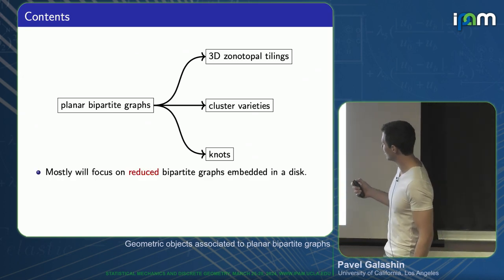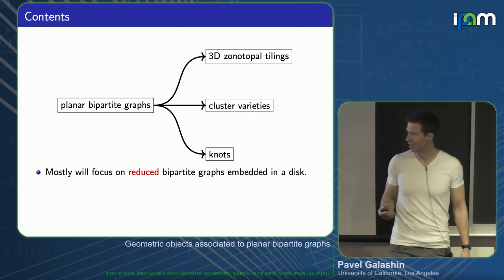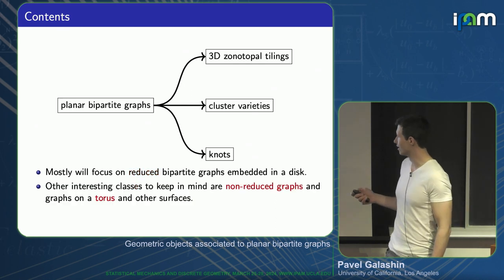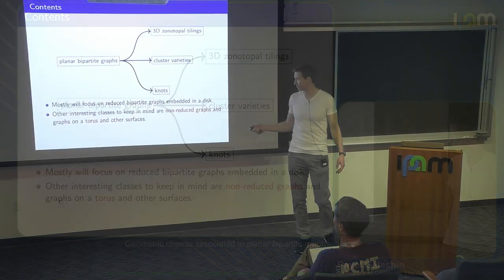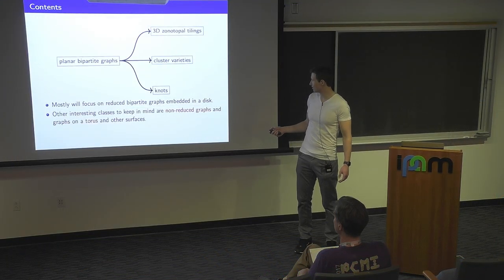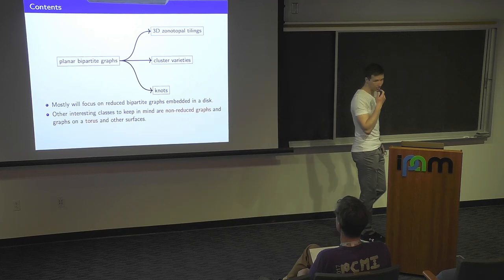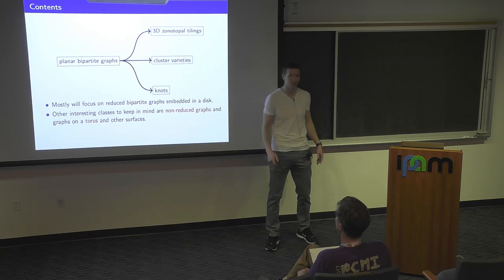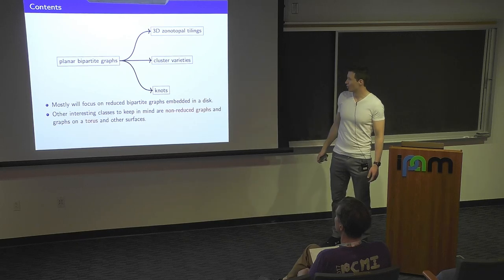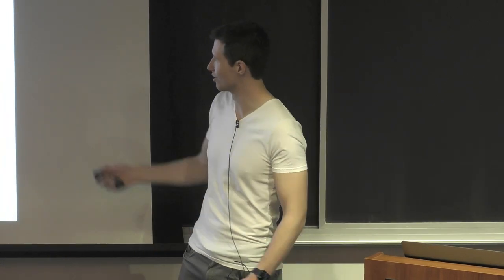Throughout, I'm going to focus on something called reduced bipartite graphs in a disk. But you should keep in mind that there are other interesting classes of planar bipartite graphs. You don't have to assume that they're reduced — I'll define this later. You can also consider graphs on the torus, or any other surface, maybe a cylinder, which many people are interested in. A lot of these things could be developed for these other cases, but nobody has thought about this yet.